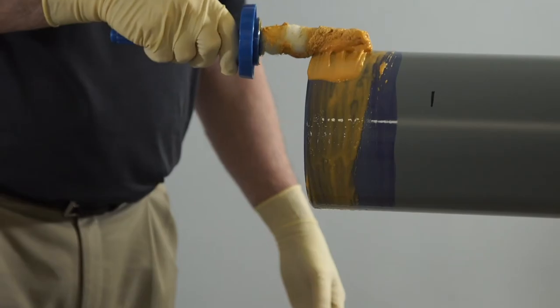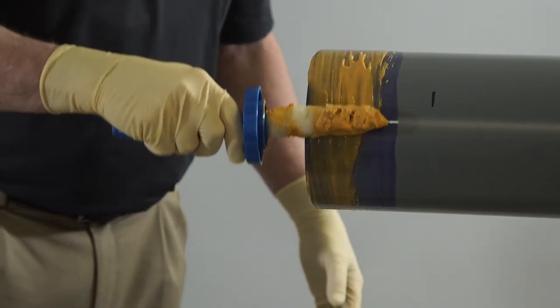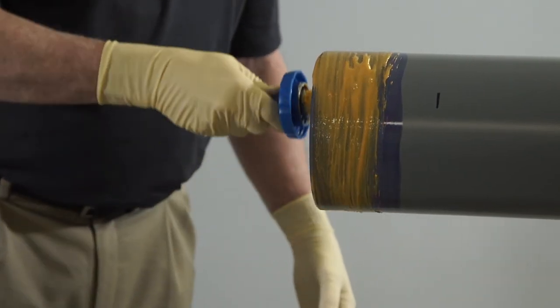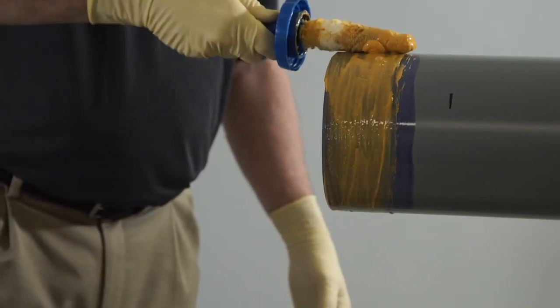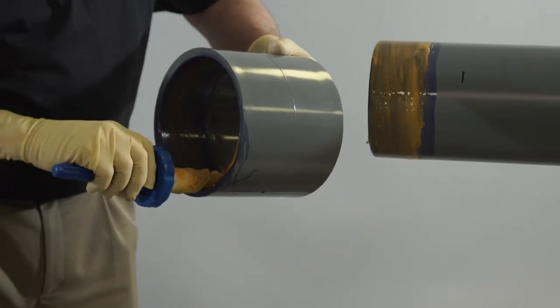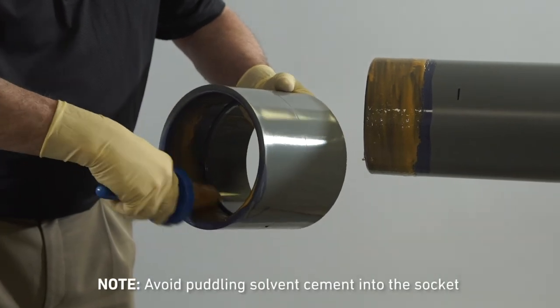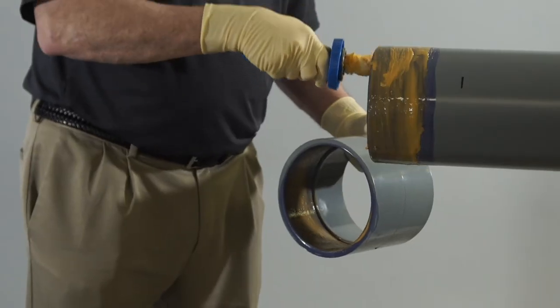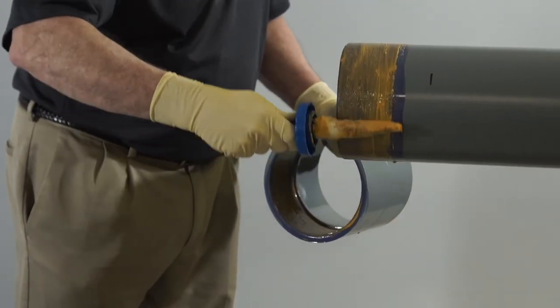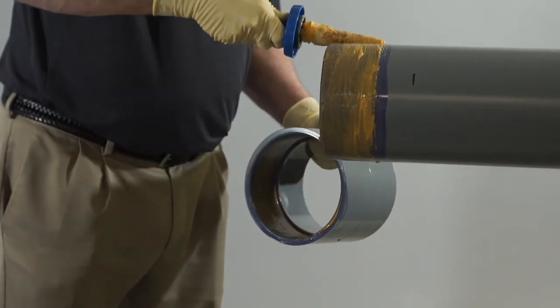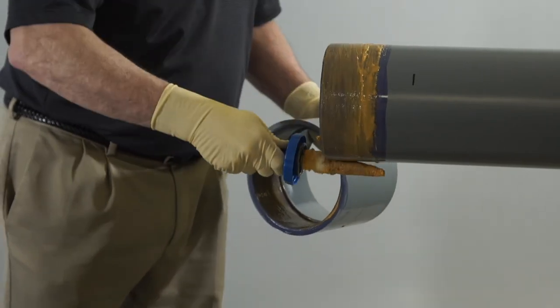Aggressively apply a full, even layer of solvent cement to the pipe, equal to the depth of the fitting socket. Do not brush the layer out to a thin paint type layer, as this will dry too quickly. Then, aggressively apply a medium layer of solvent cement into the fitting socket. Apply a second, full, even layer of the solvent cement on the pipe. Most joint failures are caused by insufficient application of solvent cement.